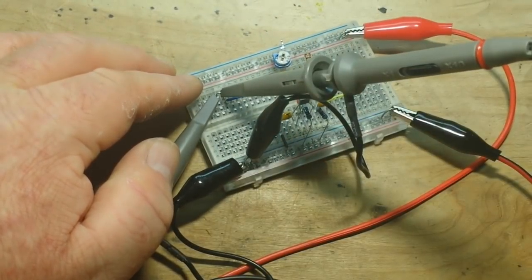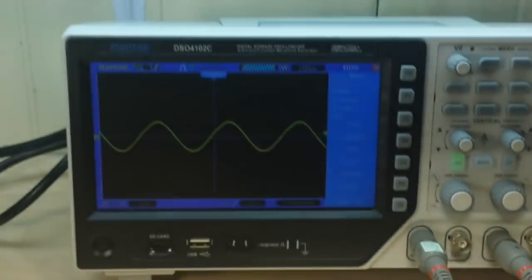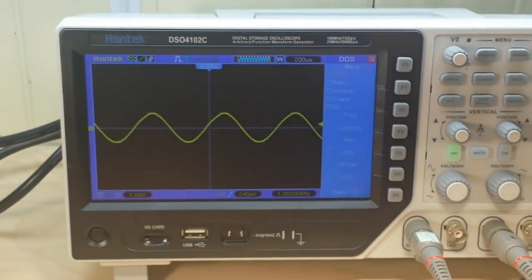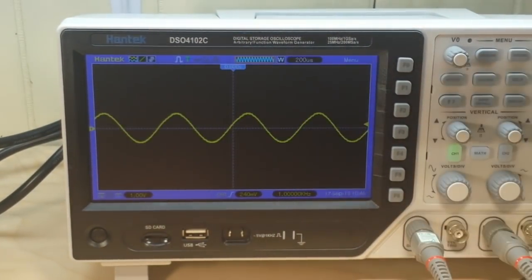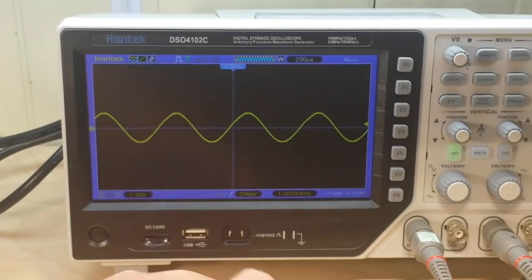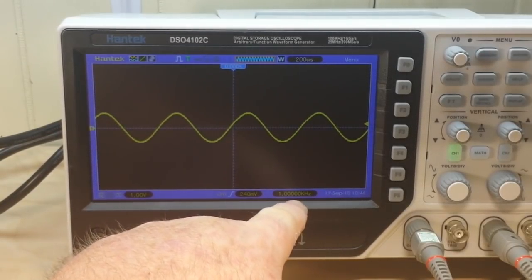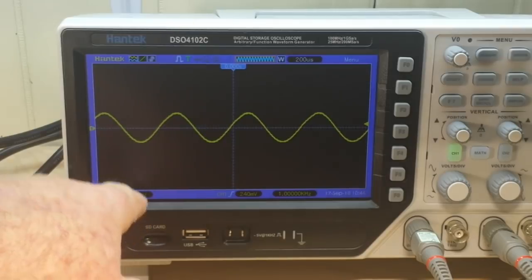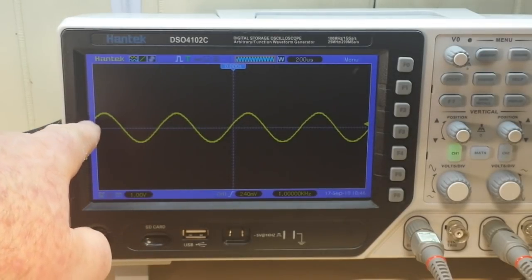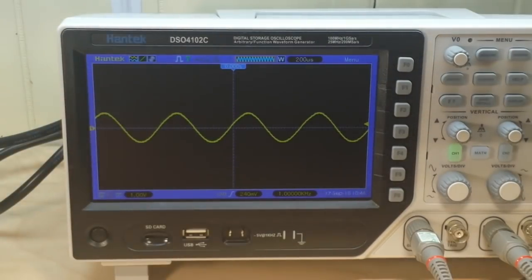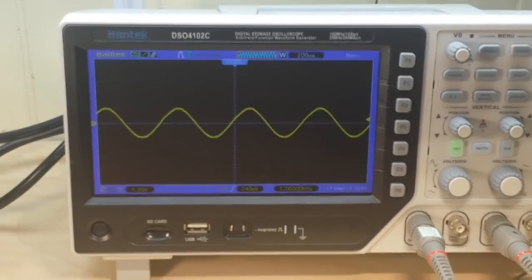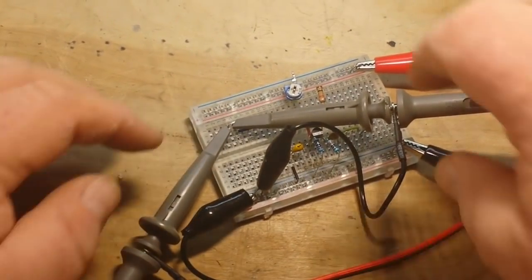So the signal from the signal generator, the 1 volt 1kHz sine wave is going in there. What we can do here is take a look at it on the scope. Okay so we're hooked up there. Alright, so we are seeing a 1kHz signal, we're at 1 volt per division, so we're seeing 2 volts peak to peak. That's our input.